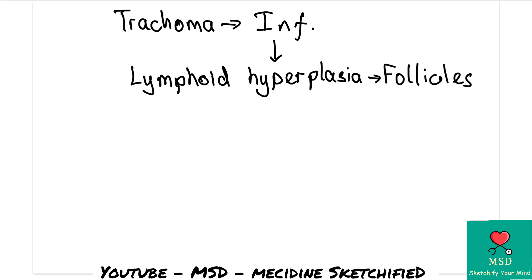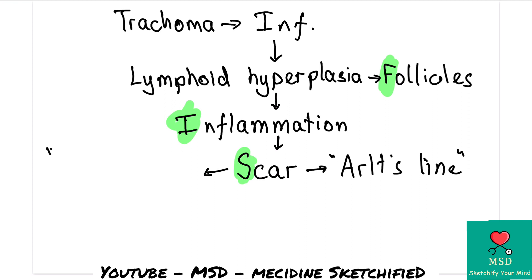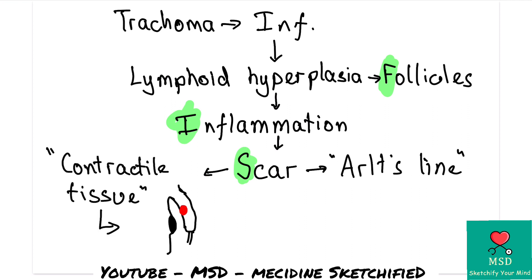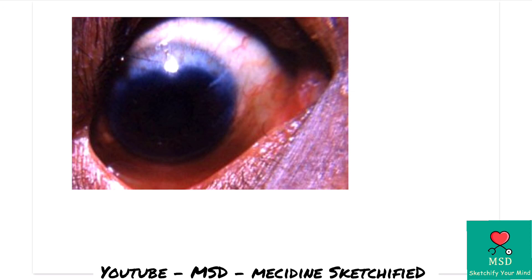Since scar is a contractile tissue, it bends the eyelid. The eyelashes then rub on the eye — this is called trichiasis, which is the T stage. After trichiasis, the affected area becomes opaque. This is corneal opacity, which is the O stage in FISTO staging.